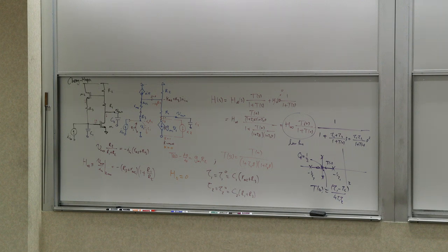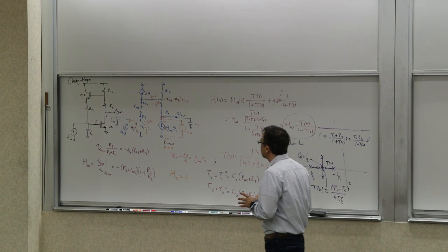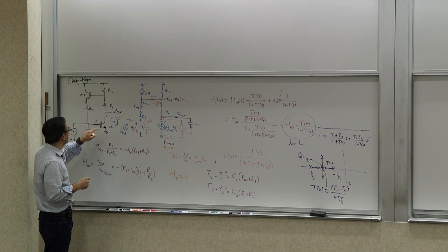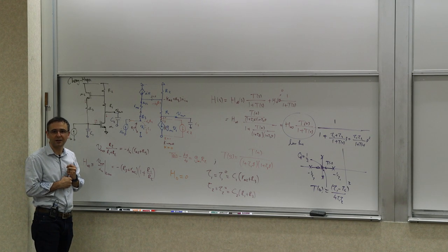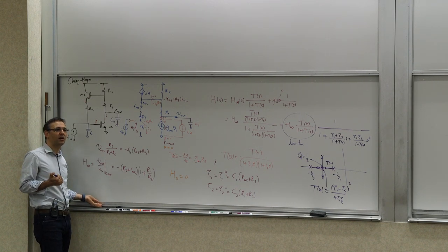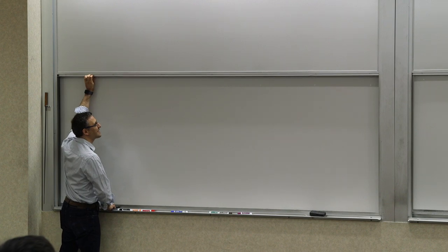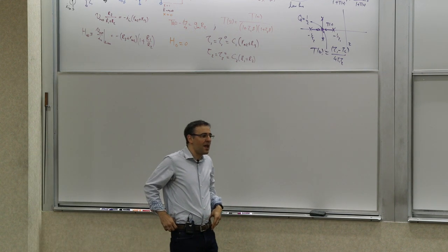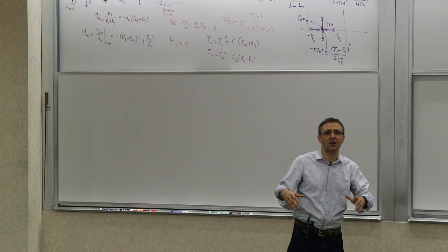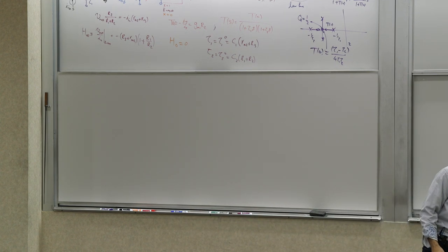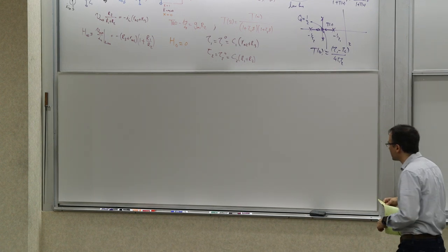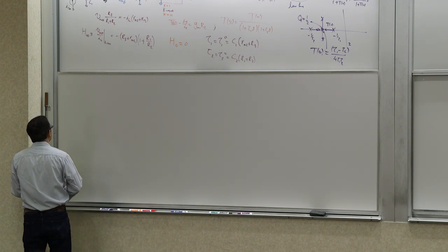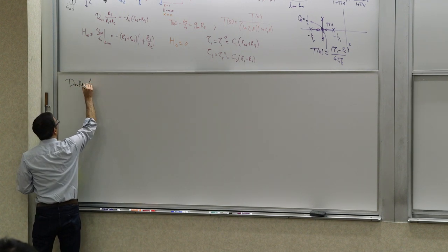Now I'll show you another example briefly. All the feedback networks we've seen so far had a single identifiable feedback loop path. But that's not necessarily the case — there can be multiple feedback paths. Let's see a simple example with two feedback paths and see how this methodology is applied.